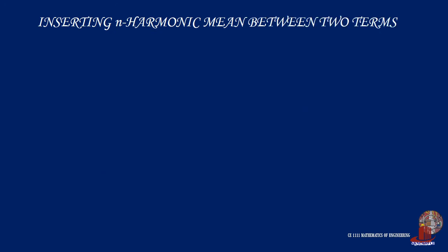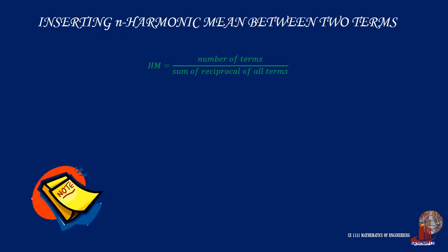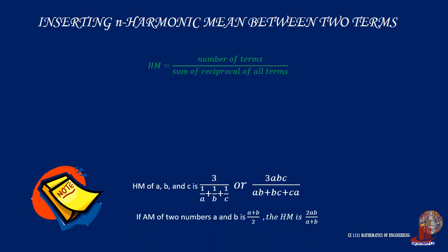In cases where there would be more harmonic means between two terms, the following formula will be used. Also take note that the harmonic mean of three terms a, b, and c can be solved by 3abc over ab plus bc plus ca. Another point to remember, if the arithmetic mean of two numbers a and b is a plus b upon 2, the harmonic mean is 2ab over a plus b.